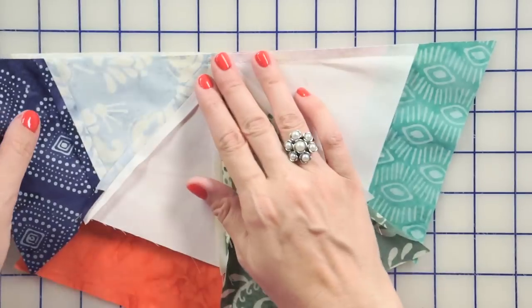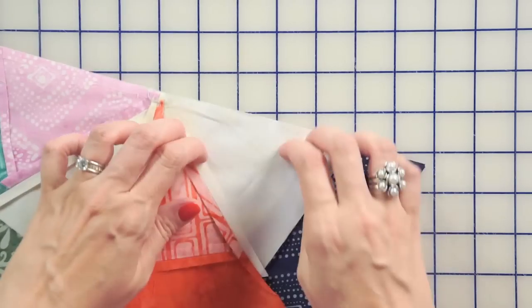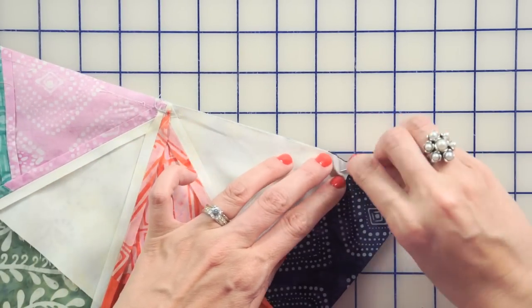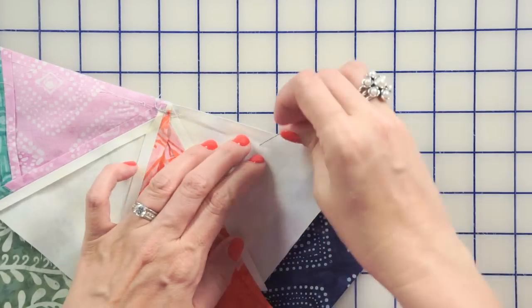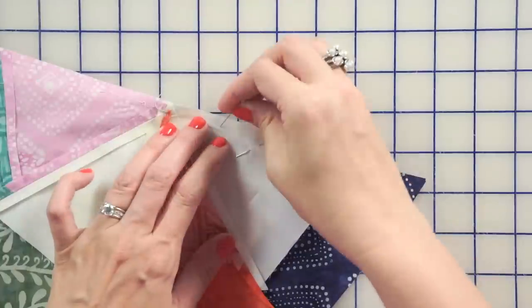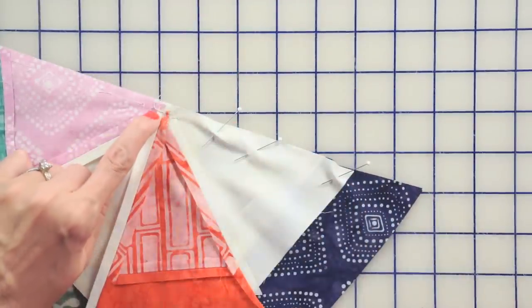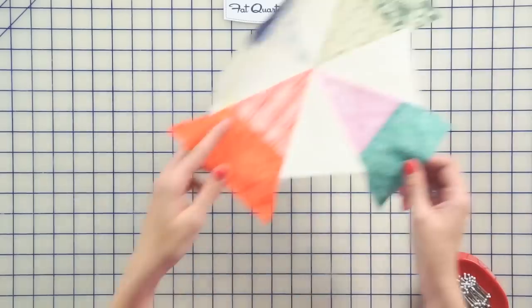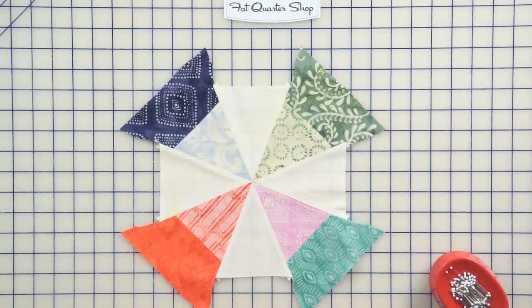Then you're gonna close it up, flip it over, and pin some more. And then you're going to start stitching before your previous stitches and stitch all the way to the end. And you're gonna have your nice, beautiful block.